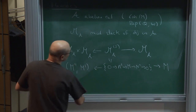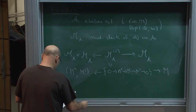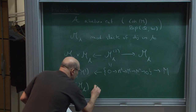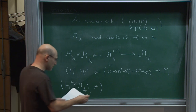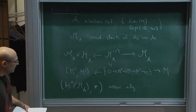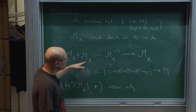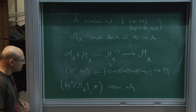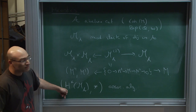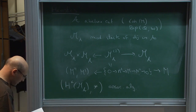Out of this, modulo some technical difficulties, you can define a structure of an algebra on the cohomology of this moduli stack — some kind of associative algebra. You have to work to define it because these stacks are usually singular and these maps are not regular. There are also many choices for the cohomology theory: singular cohomology, Borel-Moore homology, K-theory, mixed Hodge structure, and so on.